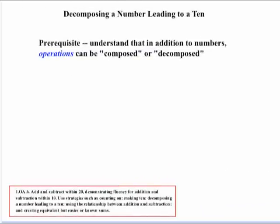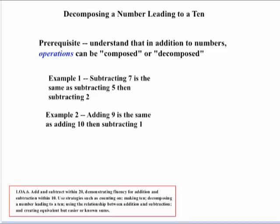The third strategy is decomposing a number leading to a 10. A prerequisite is that kids need to understand that not just numbers, but operations can be composed and decomposed as well. For example, subtracting 7 is the same as subtracting 5 and then subtracting 2 — you don't have to subtract 7 all at once. Another example: adding 9 can be thought of as adding 10 and then subtracting 1, because those are equivalent.